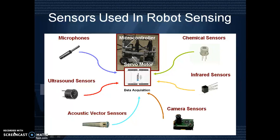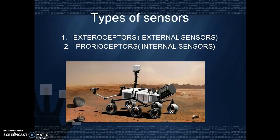These are some sensors used in robot sensing. There is a bot attached with a microcontroller and servo motor, and all other sensors are attached to the microcontroller. Various sensors include microphones, ultrasonic sensors, acoustic vector sensors, camera sensors, infrared sensors, and chemical sensors. The types of sensors are exterior receptors and proprioceptors. Exterior receptors are external sensors — those externally attached to a bot. Internal sensors are those internally fixed or embedded in the bot.